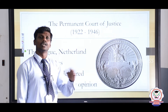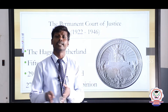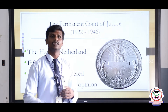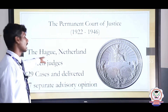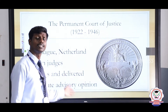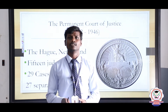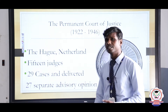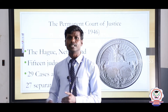The Permanent Court of Justice was established in 1922 and ended in 1946. It shows that the League of Nations was established in 1920 and worked until 1946 — even for a year after the Second World War — before being dissolved due to the introduction of the UNO. The court was located in The Hague, Netherlands. It consisted of 15 judges, handled 29 cases, and gave 27 separate advisory opinions to member nations.